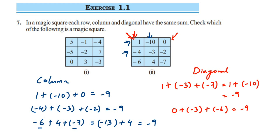Since all rows, columns, and diagonals of the second square give the same sum of −9, we can say it is a magic square. If even one sum is different, it is not a magic square. I hope this question is clear — if you have any doubt, you can drop a comment. Thank you so much for watching.